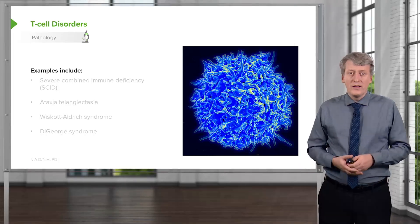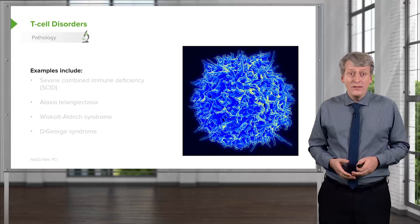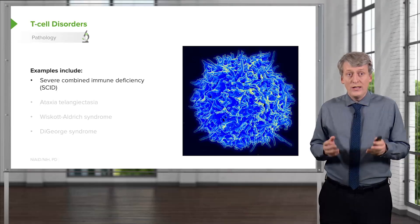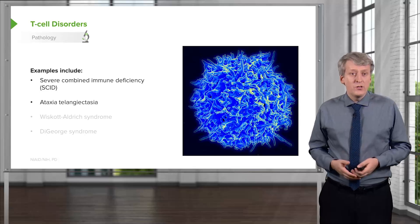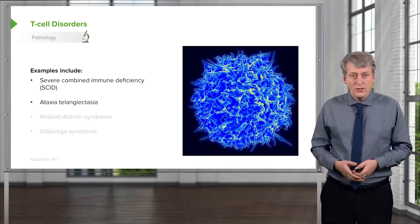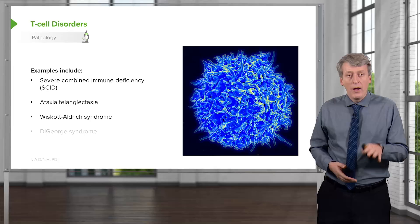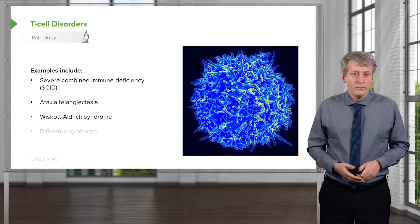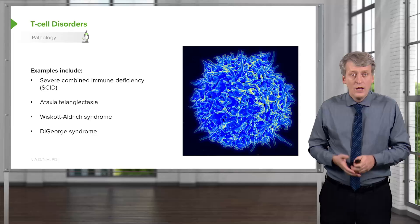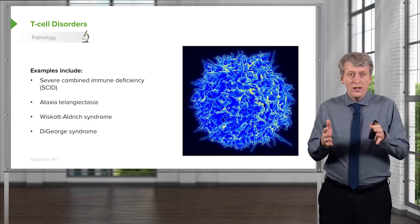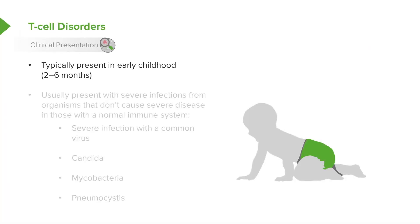Let's do some examples. In kids, we may see Severe Combined Immune Deficiency, or SCID — this is what the bubble boy had. We may also see ataxia telangiectasia, Wiskott-Aldrich syndrome, and DiGeorge syndrome. These are all examples of T-cell disorders in children. Typically, children with defunct T-cells present relatively early, between two and six months of age.